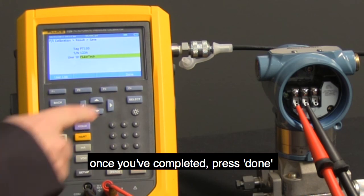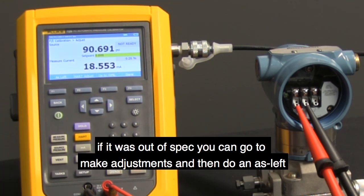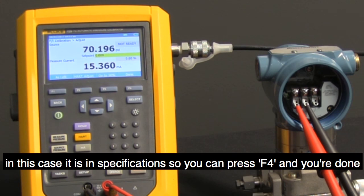Once you've completed, press done and now the calibration has been documented. If it was out of spec, you can go to make adjustments and then do an as left. In this case, it is in specification, so you can press F4 and you're done.